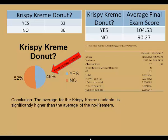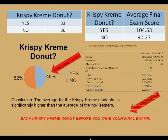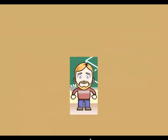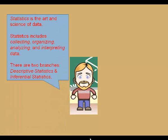That brings us to the interpretation. In plain English, what did we learn? Eat a donut before you take your final. And because I'm using the results from a small group of students to draw conclusions about all students, this is an example of inferential statistics. So, Statistics is the art and science of data and includes collecting, organizing, analyzing, and interpreting data. And there are two branches: descriptive statistics and inferential statistics.